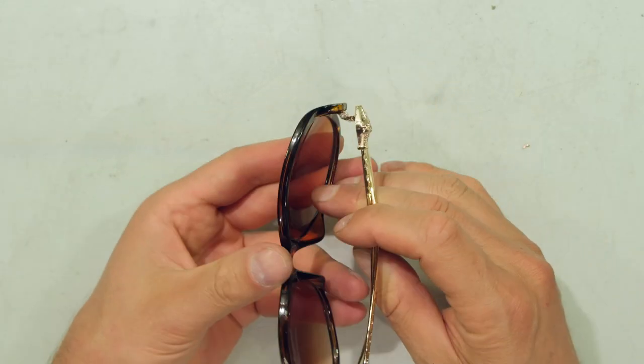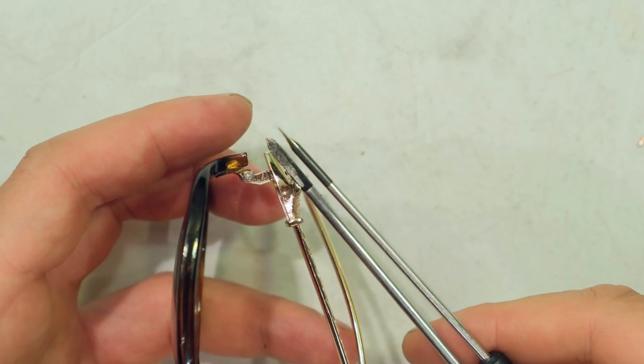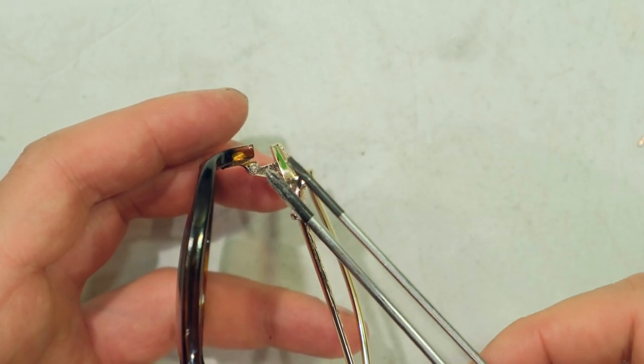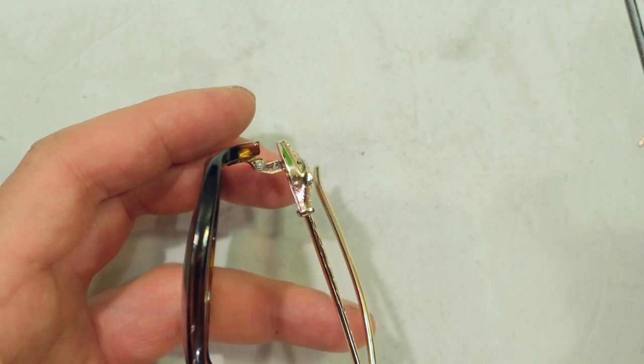So if you look on the sides here, you will see two screws, one on each side. You will need a jeweler's type screwdriver, either a star or a flat depending on the screw that is on your sunglasses or spectacles.